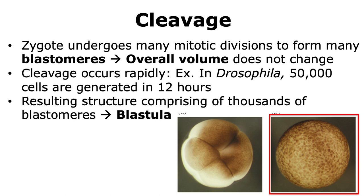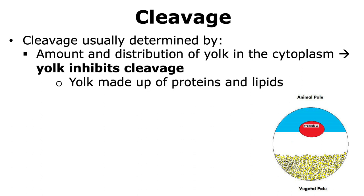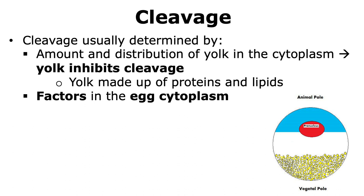The resulting structure, made up of thousands of blastomeres, is called a blastula, as shown on the right side of the figure. The way cleavage happens is usually determined by the amount and distribution of yolk present in the cytoplasm of the fertilized zygote. Yolk actually inhibits the process of cleavage. Yolk is made up of proteins and lipids and is very important as the nutrient for the growing embryo. In addition to yolk, other proteins in the cytoplasm can also influence cleavage.